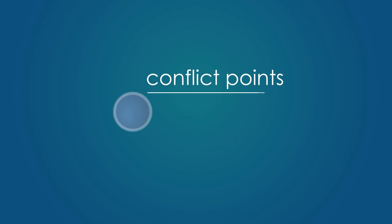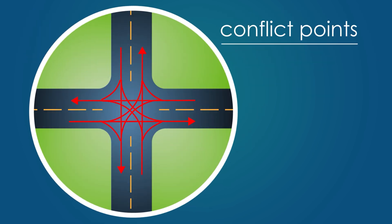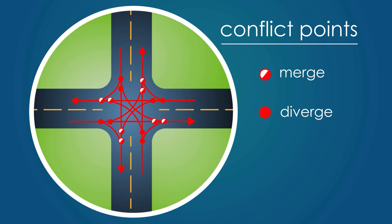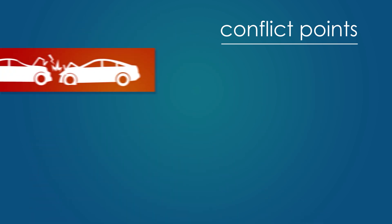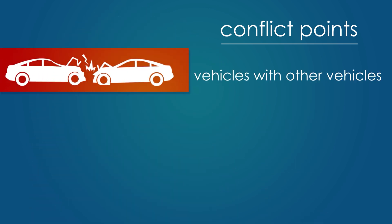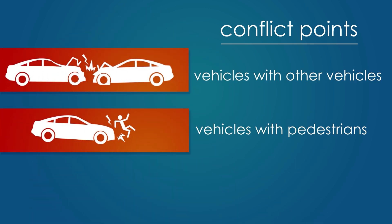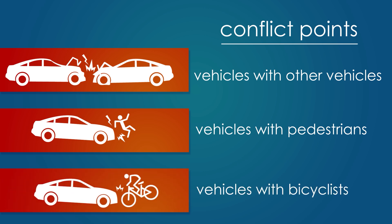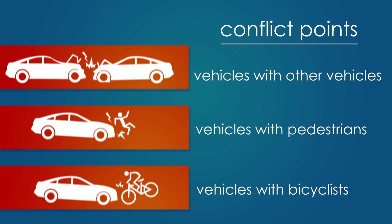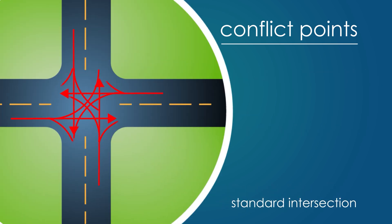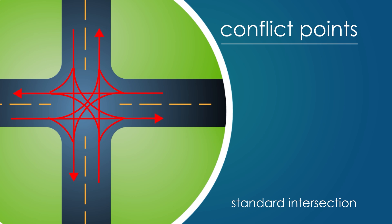Intersection conflict points are where the paths of different intersection movements merge, diverge, or cross. They can involve vehicles with other vehicles, vehicles with pedestrians, or vehicles with bicyclists. Where there is a conflict point, there is the potential for a collision between users.